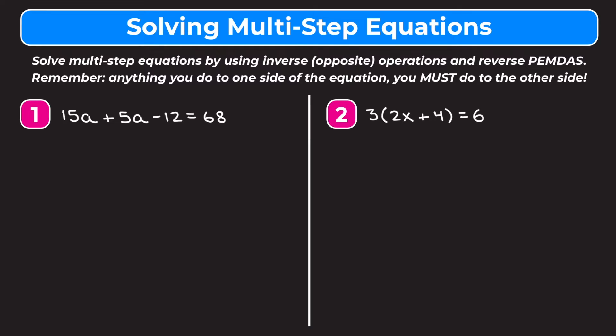Example one is 15a plus 5a minus 12 equals 68. In this equation we have two variable terms on the same side, so we want to start by combining them. Anytime we have more than one variable term, that's going to be our first step. We combine 15a and 5a to get 20a, giving us 20a minus 12 equals 68. Now we use inverse operations and reverse PEMDAS.